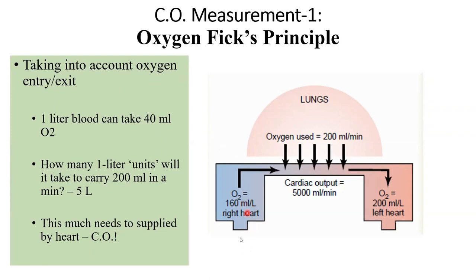This is the right side of the heart and this is the left side of the heart. Blood, when it's pumped into the right side, the right side then pumps it into the lungs, it then becomes oxygenated and is received in the left side of the heart. The oxygen concentration in blood received by the lungs from the right side is 160 ml per liter, while after oxygenation it is 200 ml per liter.